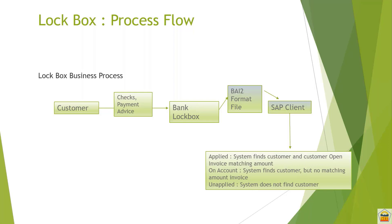After that, the company maps those payments with the open items for those customers. For example, if you were supposed to receive a payment from Customer A and Customer A deposited the money into the bank, the bank informs you. When you upload the lockbox file, the open item for Customer A will be cleared in the system, so you no longer need to chase Customer A because the line item has been cleared.